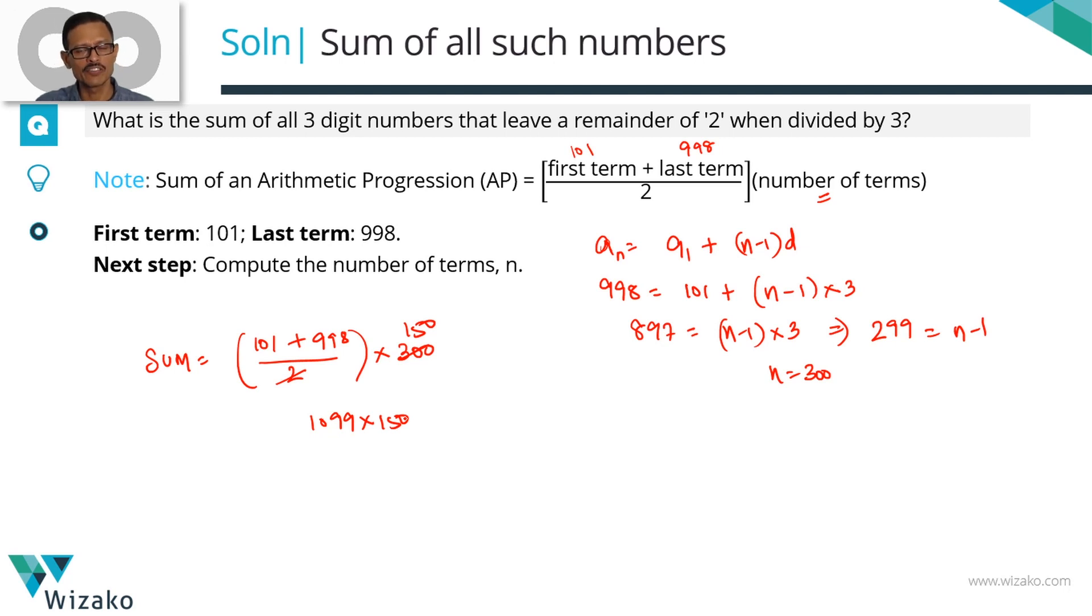1099 times 150. 1100 times 150 is 165,000 because 11 times 15 is 165. We have one less than 1100, so this equals 165,000 minus 150 which is 164,850. So sum of all three-digit numbers that leave a remainder of 2 when divided by 3 is 164,850.